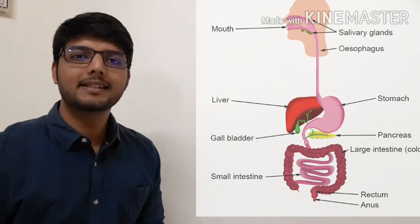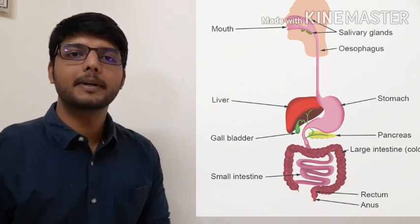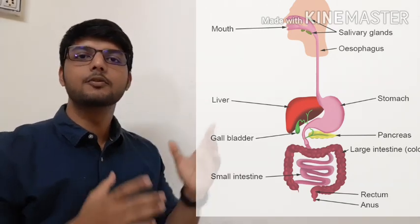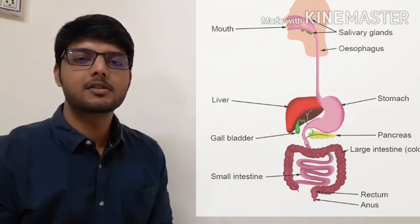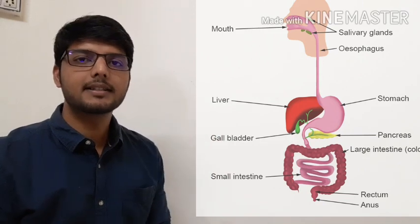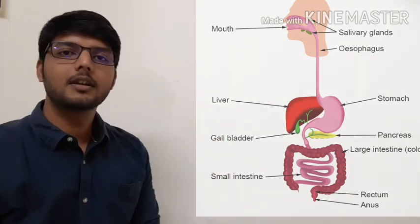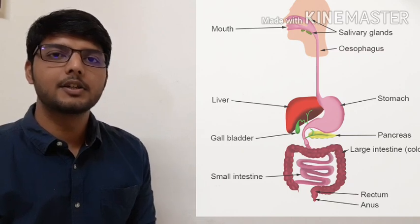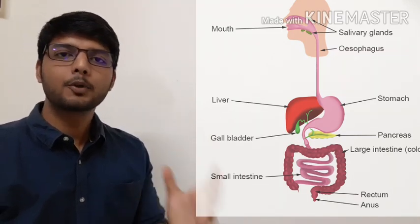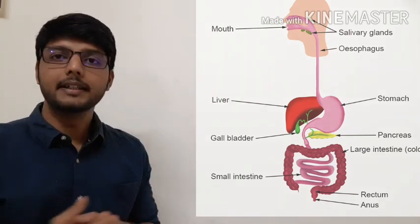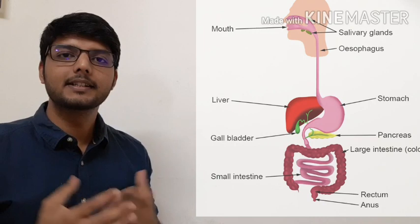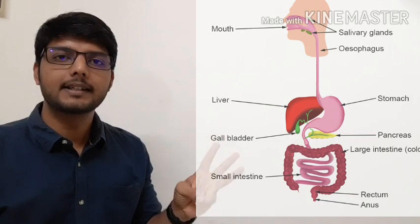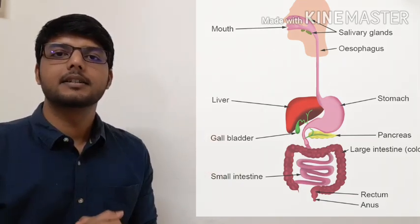Bile converts fats into tiny droplets so that further breakdown becomes easy. The pancreatic juice breaks down fats completely into fatty acids and glycerol. It also helps to break down starch, carbohydrates, and protein. The walls of the small intestine secrete intestinal juice, which breaks down starch and carbohydrates into sugar and proteins into amino acids. In this way, the food is completely broken down into very small, water-soluble substances like glucose, glycerol, fatty acids, and amino acids. This is our digested food.